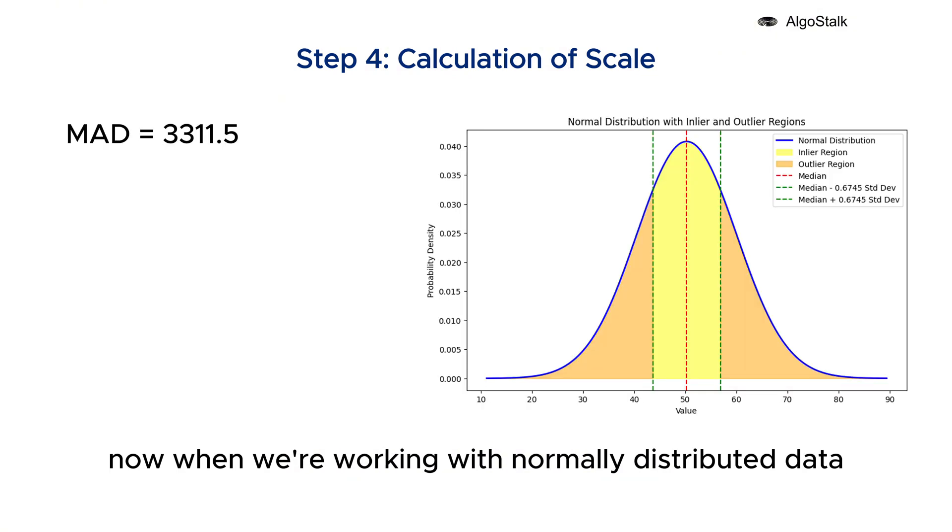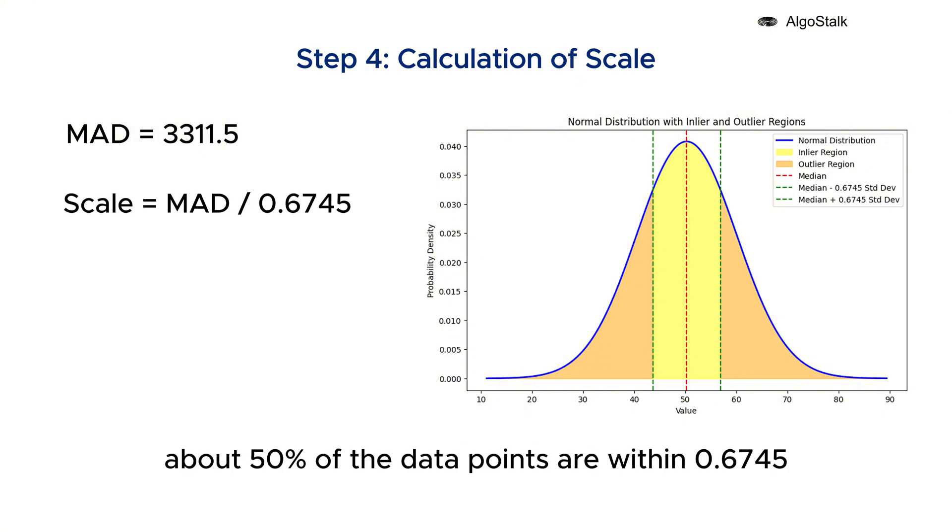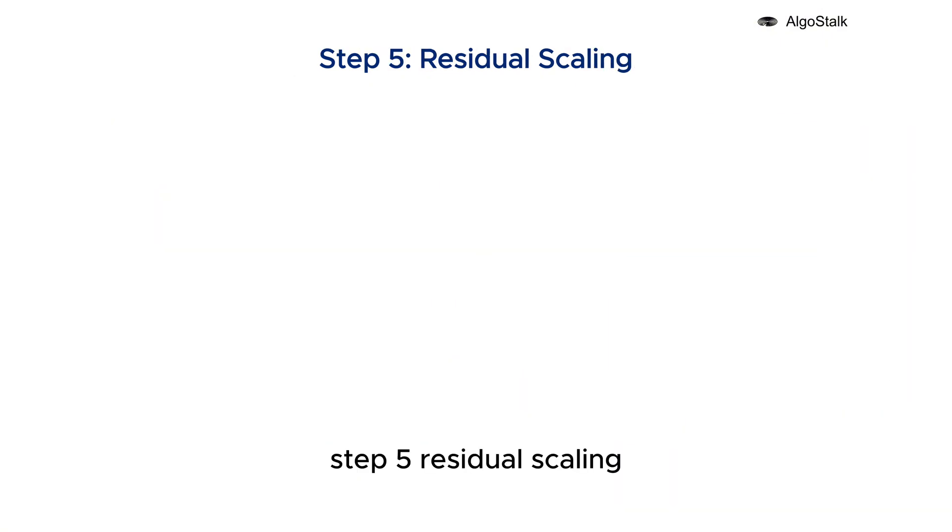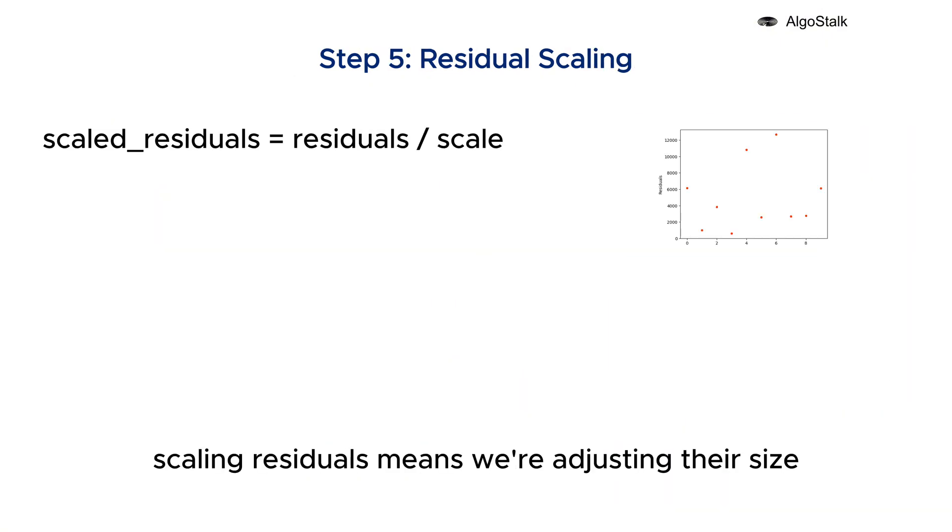Step four: calculation of scale. Now when we're working with normally distributed data, the classic bell curve, there is a special relationship between MAD and the standard deviation, which is another way to measure how spread out the data is. For a normal distribution, about 50% of the data points are within 0.6745 standard deviations from the median. This is just a fact about the shape of a normal distribution. Step five: residual scaling. Scaling residuals means we're adjusting their size, particularly for outliers.